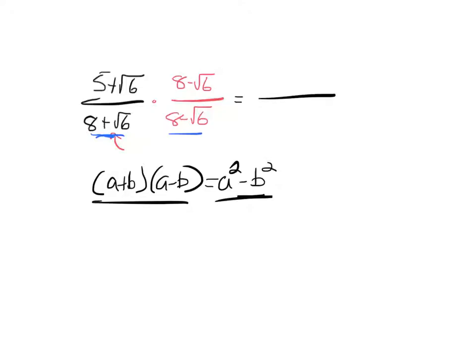So what I get down here is I'll get 64, which is 8 squared, minus 6. And 6 is the square root of 6 squared.